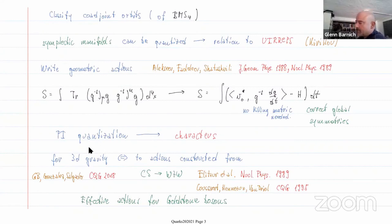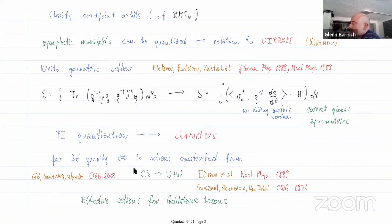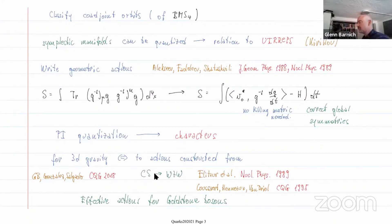If you do this for three dimensional gravity, you can do it for the groups which are relevant — BMS3 or two copies of the bi-Virasoro group. The geometric actions you get are very closely related to the ones you get from the Chern-Simons formulation of gravity. In the presence of boundary conditions, you get the reduction to the chiral Wess-Zumino-Witten theories on the boundary. Since in four dimensions one cannot really solve the constraints in the action so easily, this alternative avenue is available to cover some sector of four dimensional gravity.